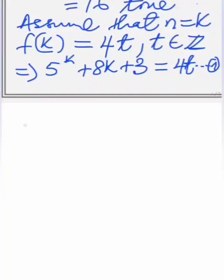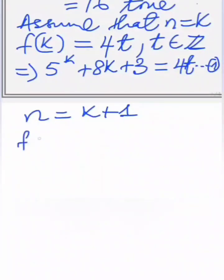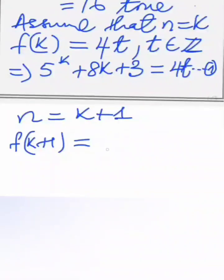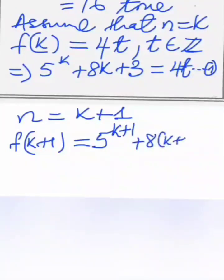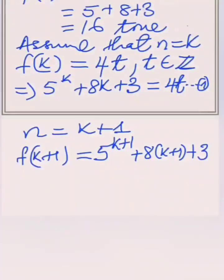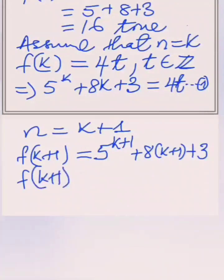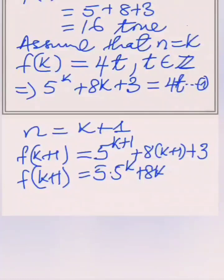Then we go to the inductive step, whereby we make use of the fact that f of k is true to prove that f of k plus 1 is true. When n is k plus 1, f of k plus 1 equals — replacing every n by k plus 1 — 5 to the k plus 1 plus 8 into k plus 1 plus 3. This gives 5 times 5 to the k plus 8k plus 8 plus 3, which gives plus 11.